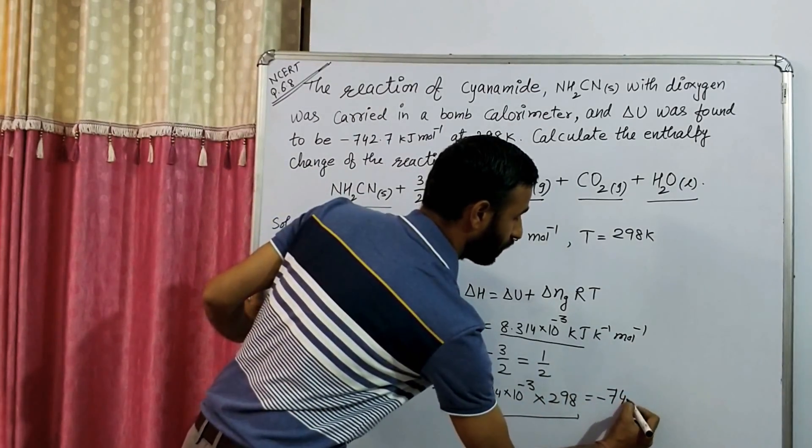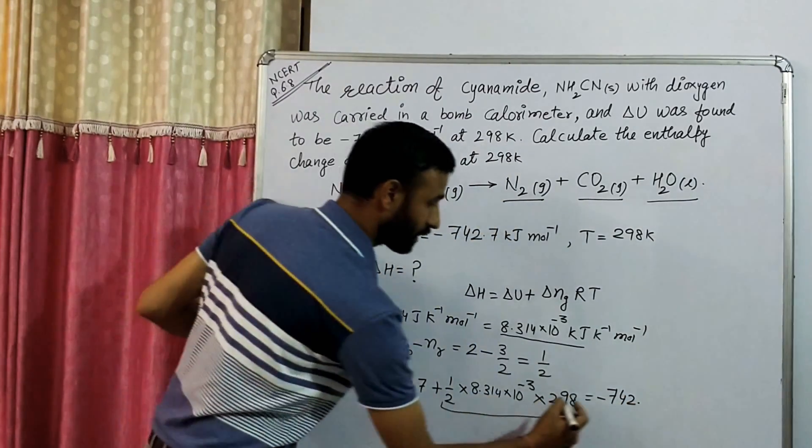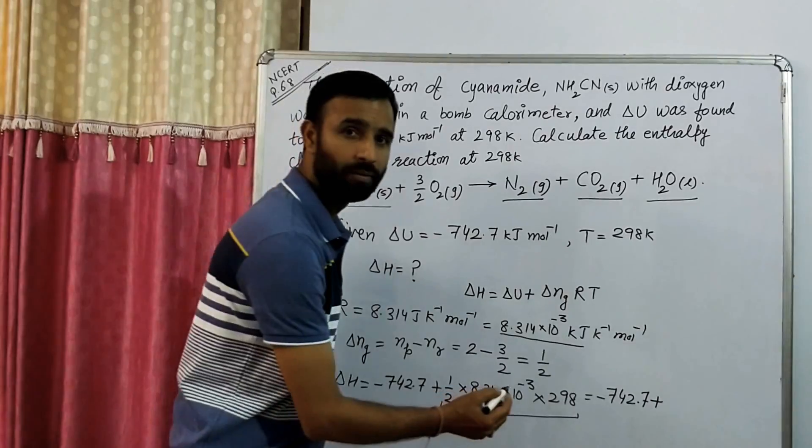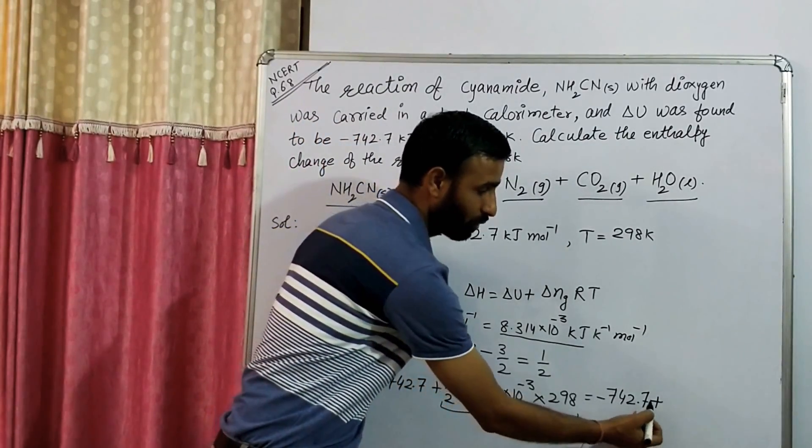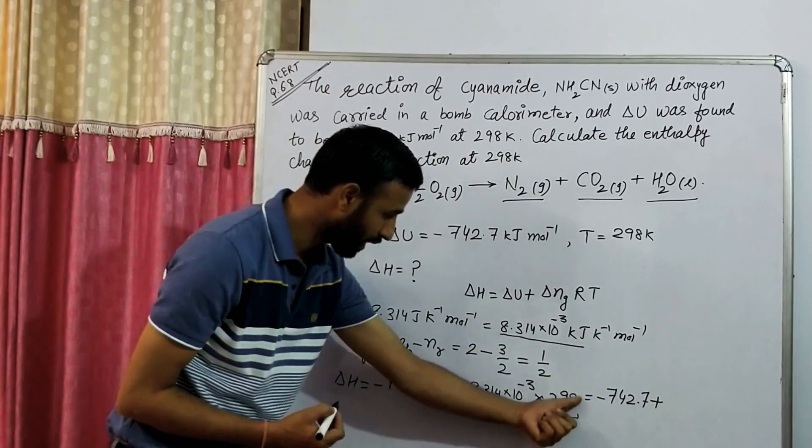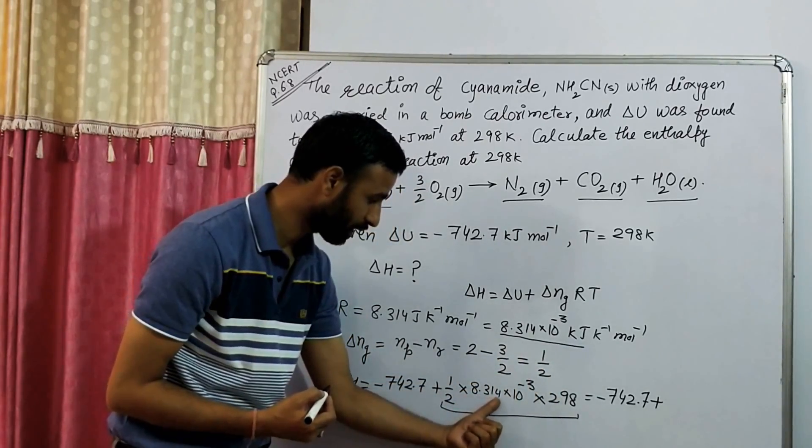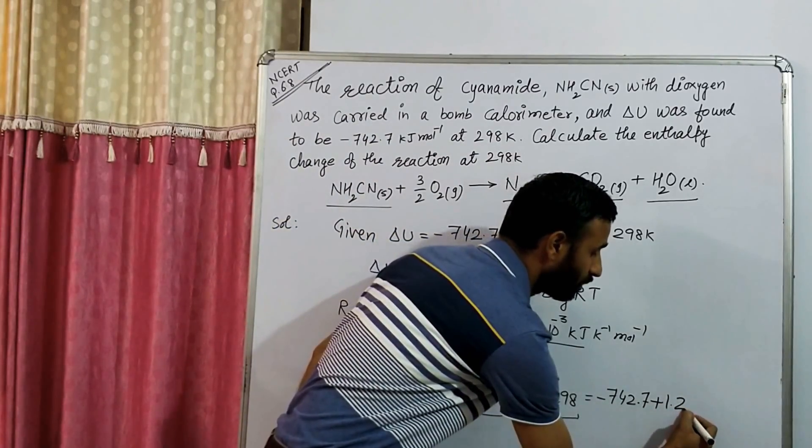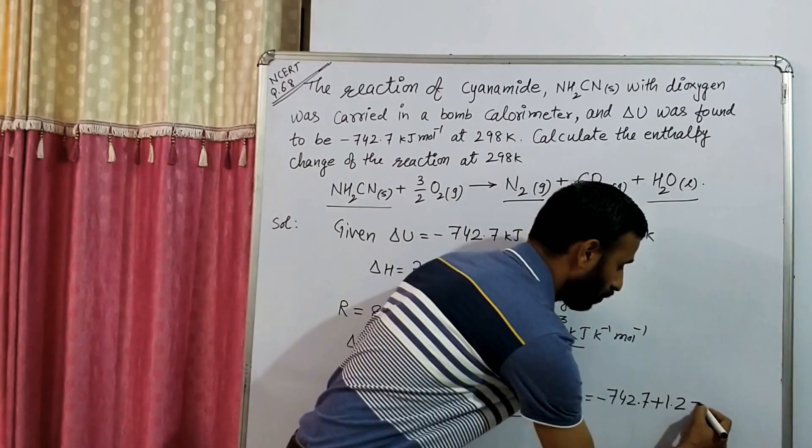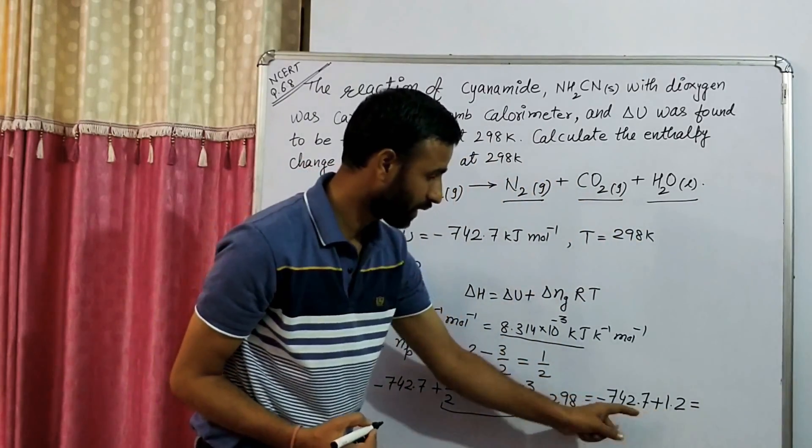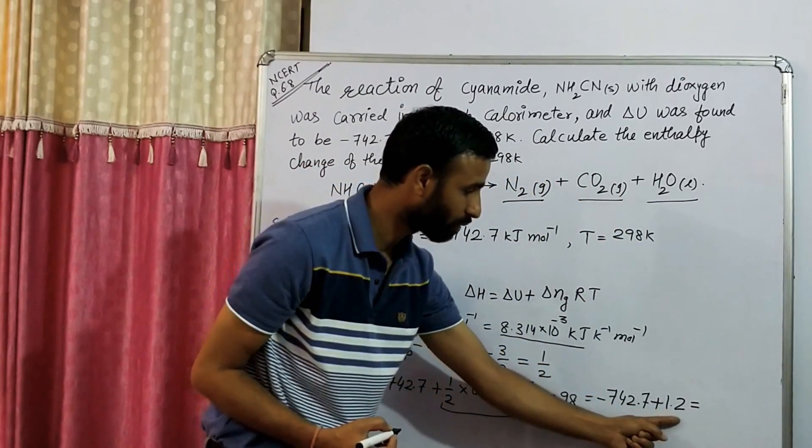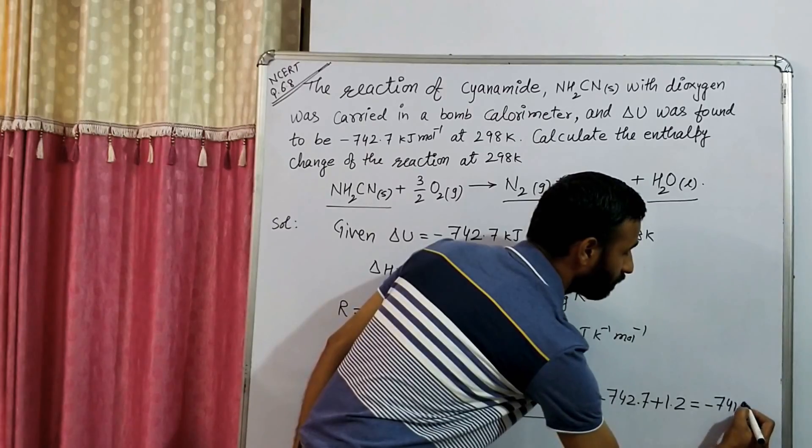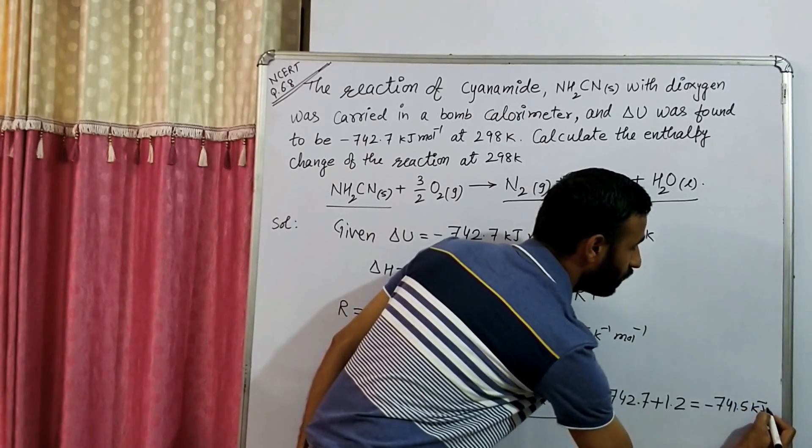So what is the value here? It is minus 742.7 plus—the value of 1/2 into 8.314 into 10 raised to the power minus 3 into 298 is 1.2. So by subtracting minus 742.7 plus 1.2, it comes out to be minus 741.5 kilojoules per mole.